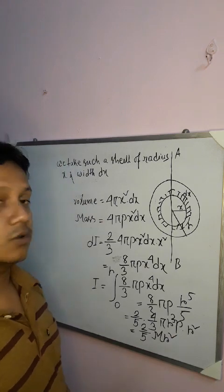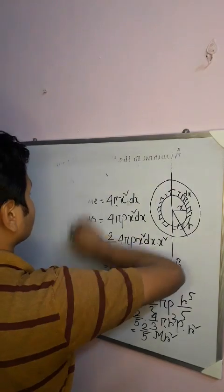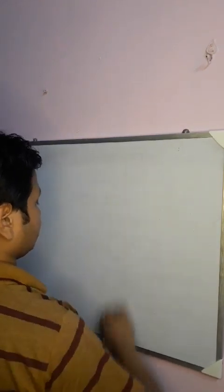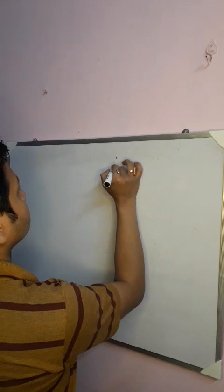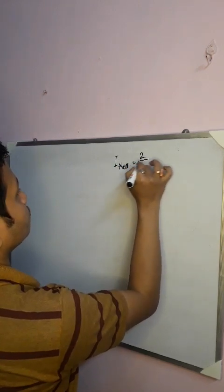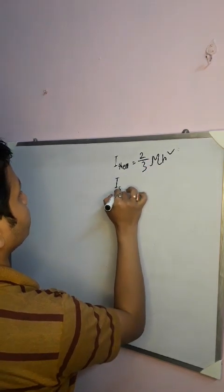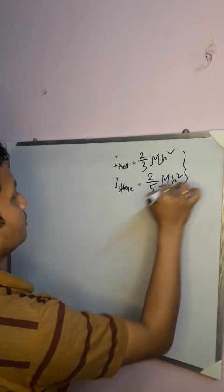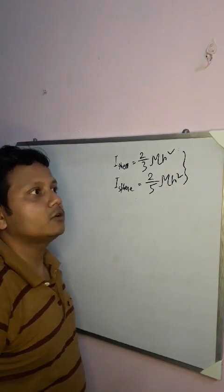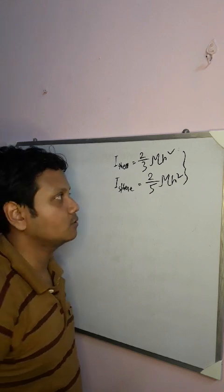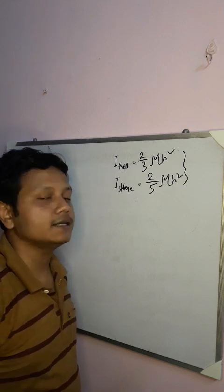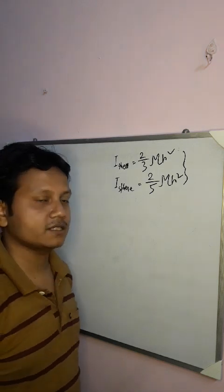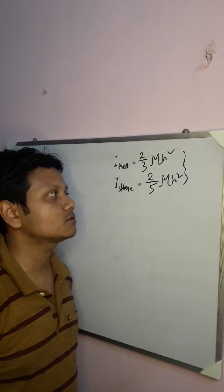In today's class we learned the moment of inertia of a thin spherical shell about a diameter, which is (2/3)MR², and that of a solid sphere about its diameter, which is (2/5)MR². In our next class we will discuss the moment of inertia of a solid circular cone. Please subscribe to the channel, and write any queries in the comment section. Thank you.